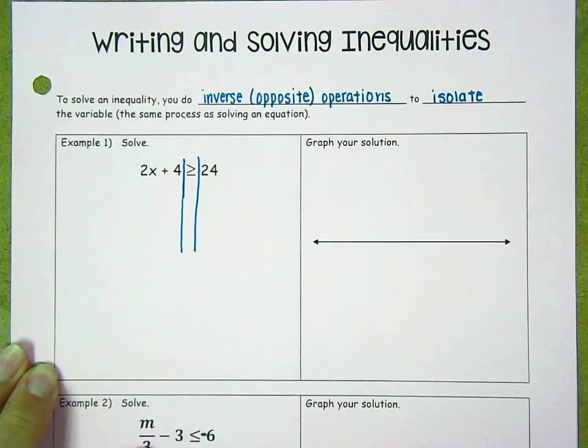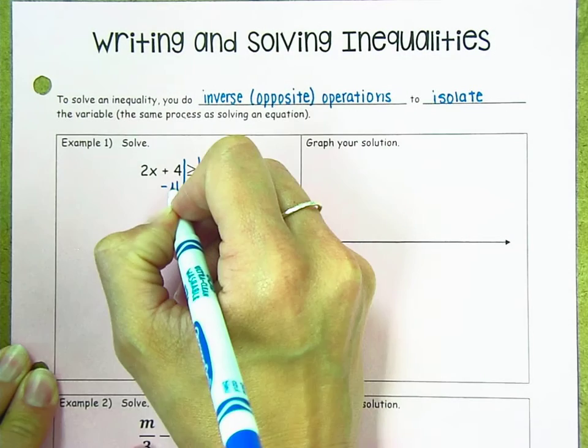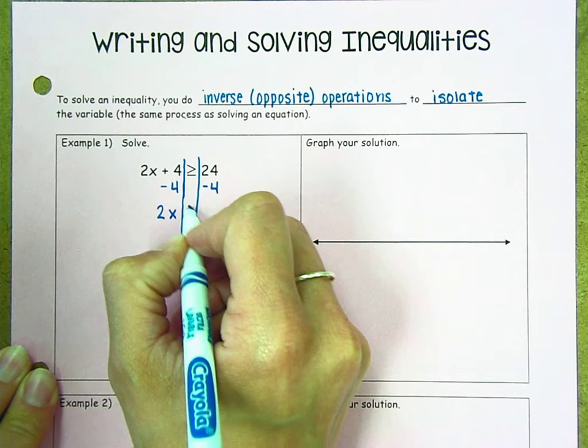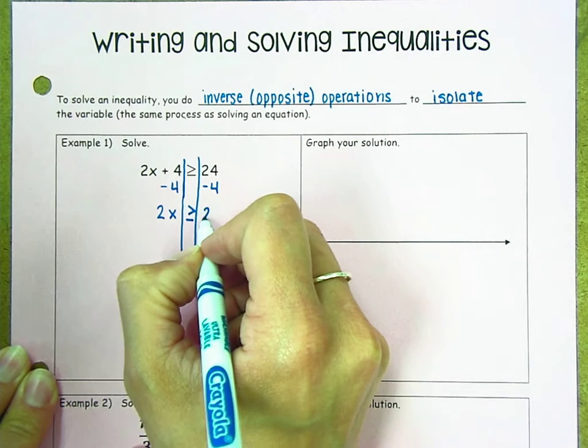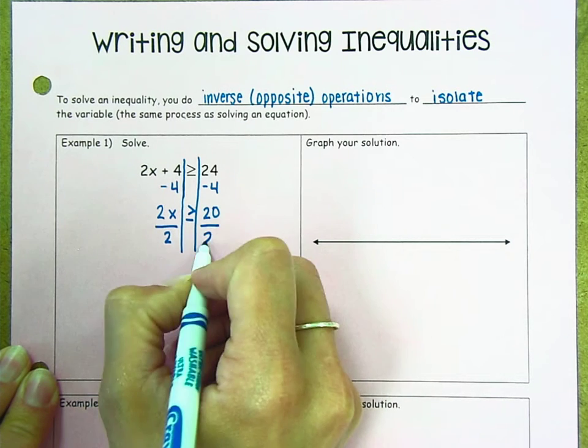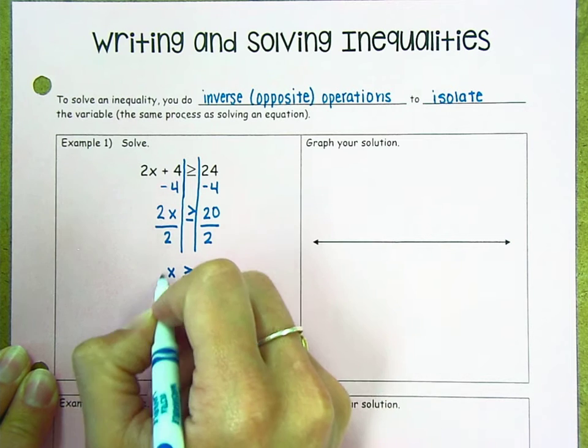And again, we're going to start by using those inverse operations. So I'm going to subtract 4 from both sides. So 2x is greater than or equal to 20. Then I'm going to divide by 2 on both sides. So x is greater than or equal to 10.